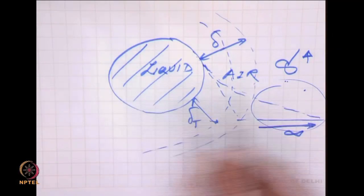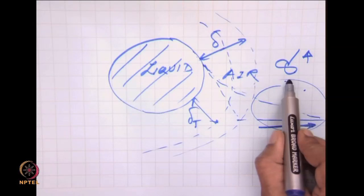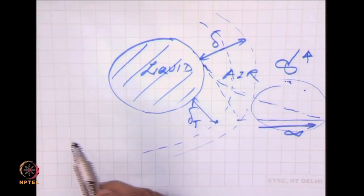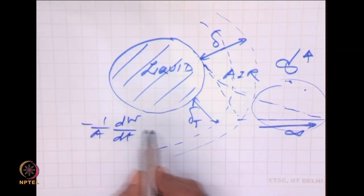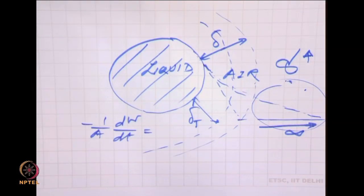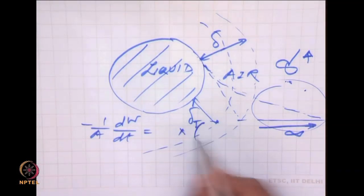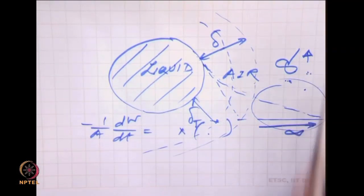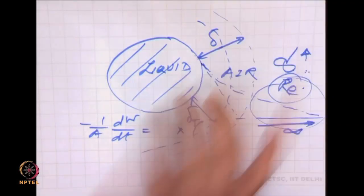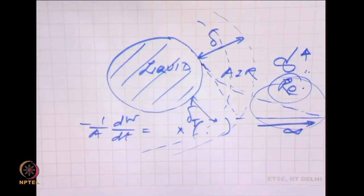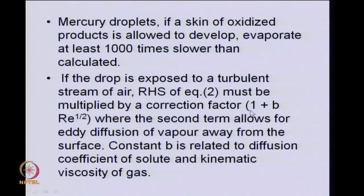So the rate of evaporation — expressed as minus 1 over A times dW by dt in terms of vapour pressure P and diffusivity D — will have to be multiplied by a certain correction factor. That factor should involve a measure of stirring, reflected in Reynolds number and certain properties. Our expression for rate of evaporation will have on the right-hand side a correction term of the form 1 plus b times Re to the power half.